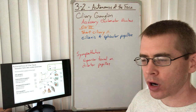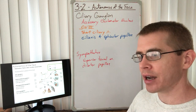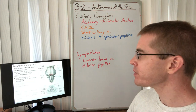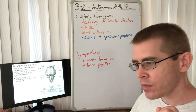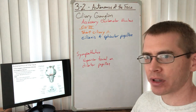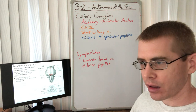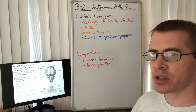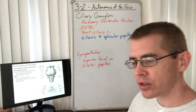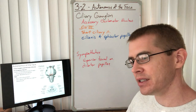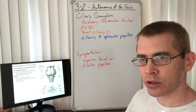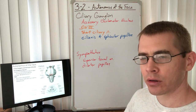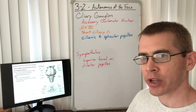The ciliary ganglion is responsible for the dilation of the eye and the accommodation of the eye. It's the parasympathetic components that perform those functions. The preganglionic parasympathetic fibers begin in the accessory oculomotor nucleus, sometimes called the visceral oculomotor nucleus, also known as the Edinger-Westphal nucleus. This nucleus is nestled within the oculomotor nucleus in the midbrain.